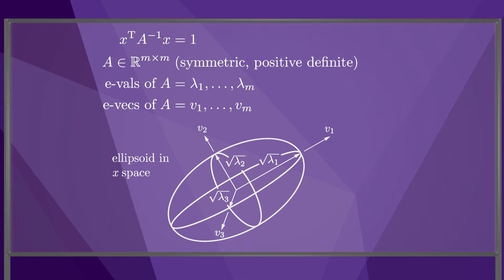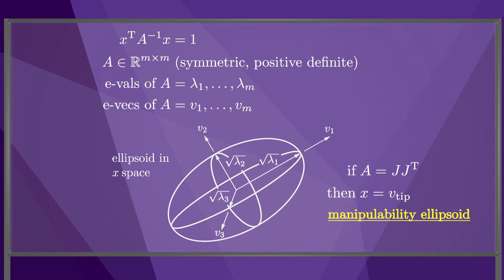In general, this ellipsoid is an m minus 1 dimensional surface in the m-dimensional space of x, but this figure shows the case where x is a 3-vector. The principal axes of the ellipsoid are aligned with the eigenvectors of A, and the half lengths of the ellipsoid along the principal axes are the square roots of the eigenvalues. This geometric interpretation holds for any symmetric positive definite matrix A, but if we choose A equals J times J transpose, then the x vector can be interpreted as v-tip, and the ellipsoid is called the manipulability ellipsoid, resulting from the unit sphere of joint velocities.